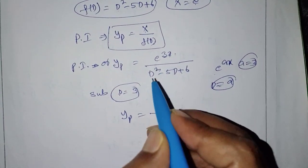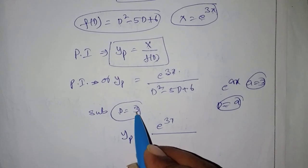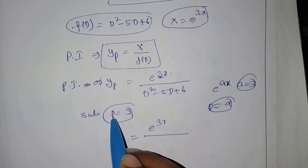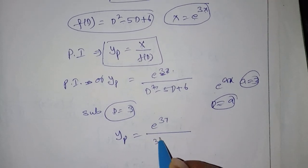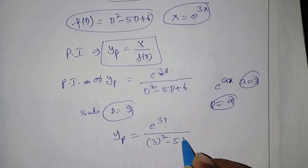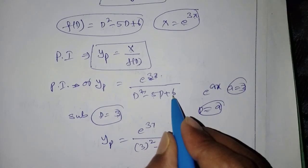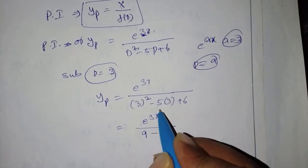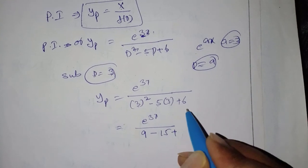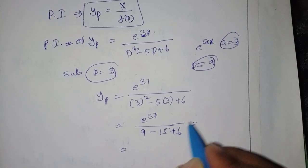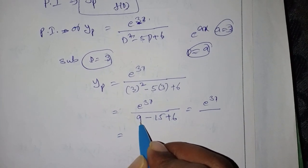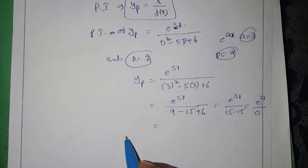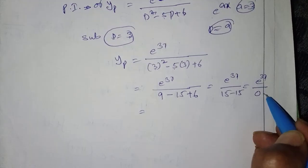We substitute D = 3 because in e^(3x) the x coefficient is 3. So yp = e^(3x) / (D² - 5D + 6) becomes e^(3x) / (3² - 5×3 + 6) = e^(3x) / (9 - 15 + 6) = e^(3x) / 0. The denominator is zero, so we cannot use this directly and must follow the factorization method.